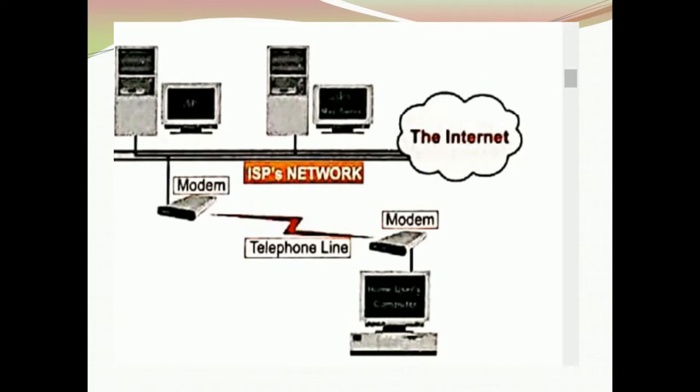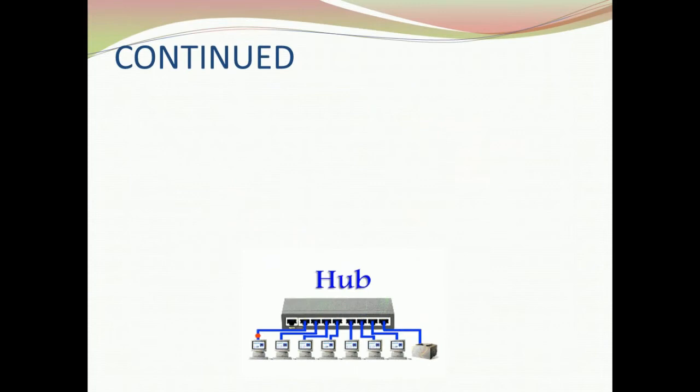The computer sends digital signals, but the telephone line cannot carry digital signals, so we need a device that will convert digital to analog — we need a modem for that. When the data in analog form reaches the server through telephone lines, it needs to be converted back into digital signals, so we use a modem at the receiver end also.